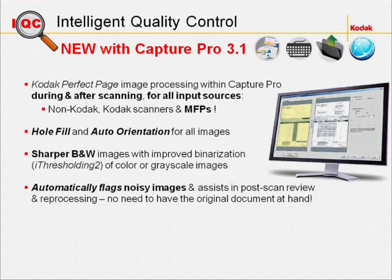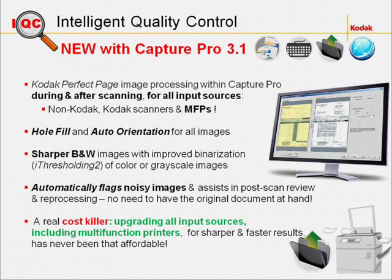After capture, any discrepancy such as noisy images is automatically flagged by CapturePro, so you can very easily fine-tune image quality, even for challenging documents, without needing to have the original piece of paper with you to scan it again. CapturePro AutoImport Edition version 3.1 is a real cost killer. You can enhance image and information input quality from your copiers at a very low cost. And if you're already using CapturePro AutoImport, think of upgrading for free to version 3.1 with your valid software assurance contract, to benefit from the new Intelligent Quality Control feature.